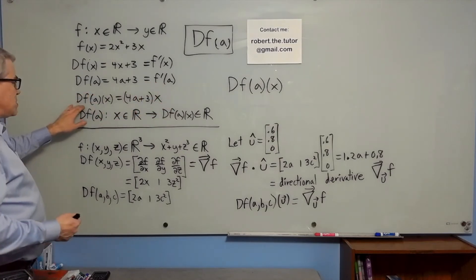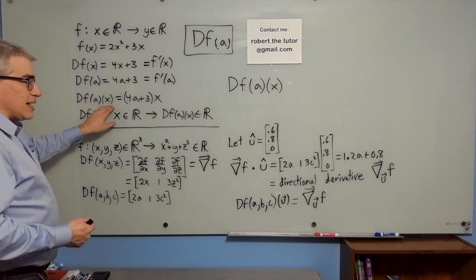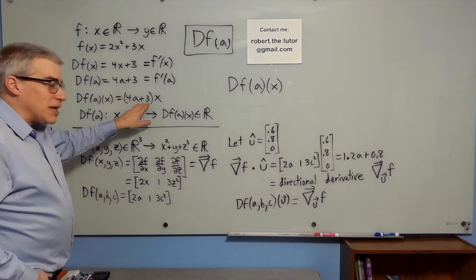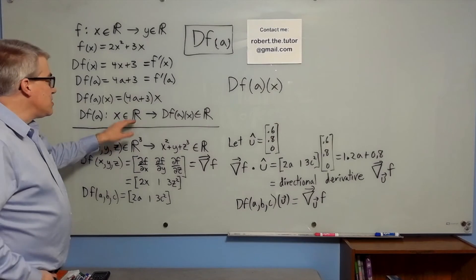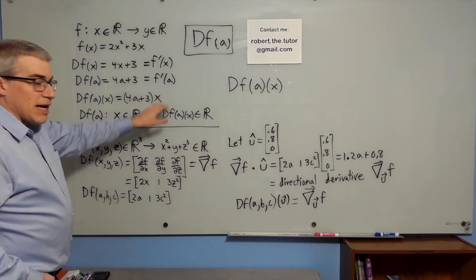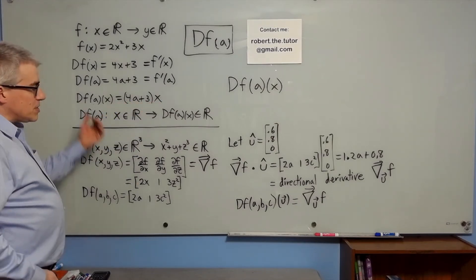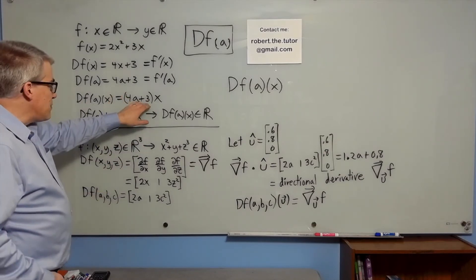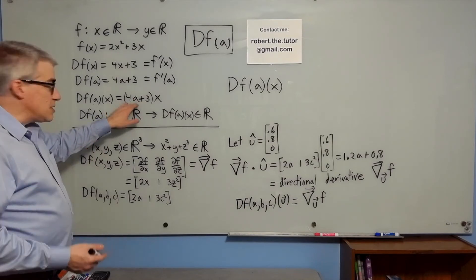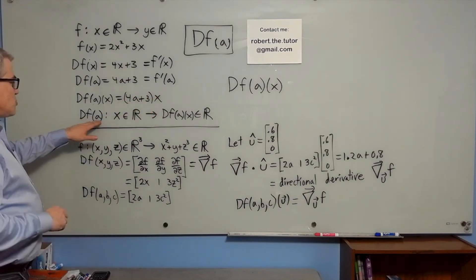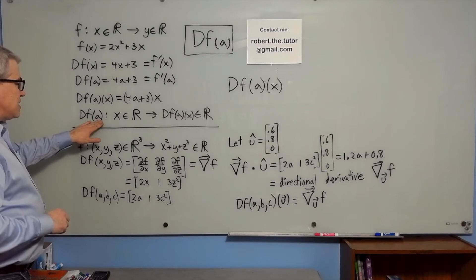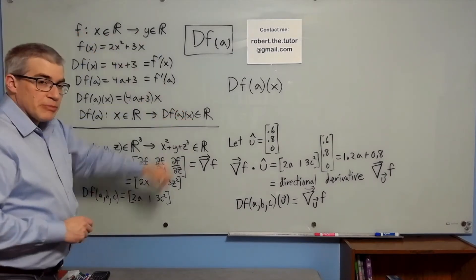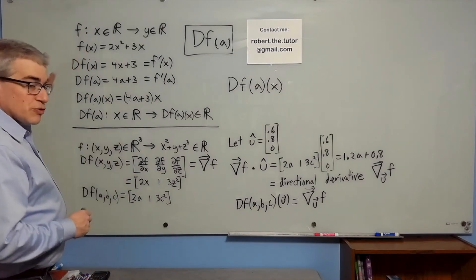But then what happens when we put this x on here? df of a of x. Well, we're essentially multiplying a one by one matrix by another one. We're multiplying two numbers. So you simply get 4a plus 3 times x. What's the point of that? In a sense, it's the tangent line, right? We have 4a plus 3 is the slope. So this is mx. I just want to point out that df of a, just like f, takes a real number and gives out a real number. So much for the one by one case.